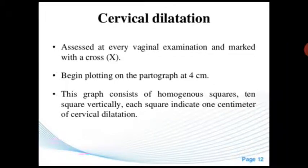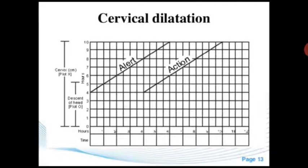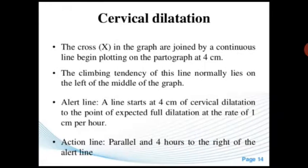Cervical dilatation is assessed at every vaginal examination and marked with a cross. We begin plotting on the partograph at four centimeters. The graph consists of squares — ten vertical squares, each indicating one centimeter of cervical dilatation. The crosses are joined by a continuous line. The tendency of the line normally lies on the left of the middle of the graph.